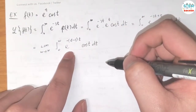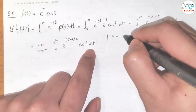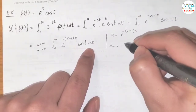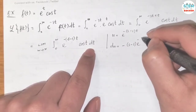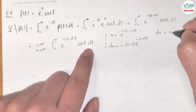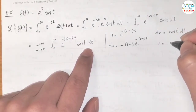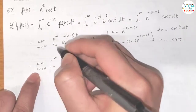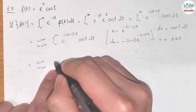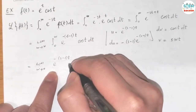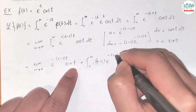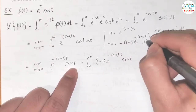To integrate this, we are going to use integration by parts. Let u = e^(-(s-1)t). Then du = -(s-1) · e^(-(s-1)t) dt. Let dv = cos(t) dt, then v = sin(t). Applying the integration by parts formula gives the limit as w goes to infinity of: e^(-(s-1)t) · sin(t) evaluated from 0 to w, plus the integral from 0 to w of (s-1) · e^(-(s-1)t) · sin(t) dt.